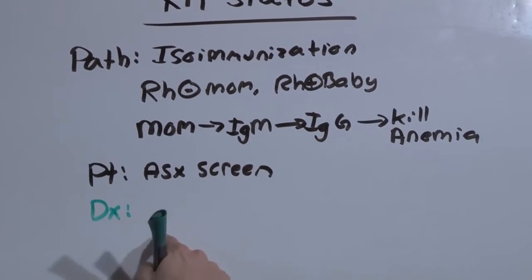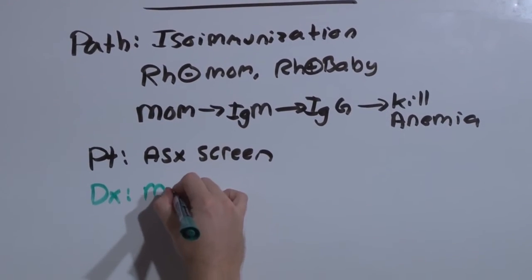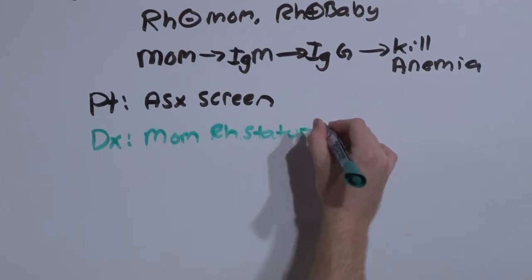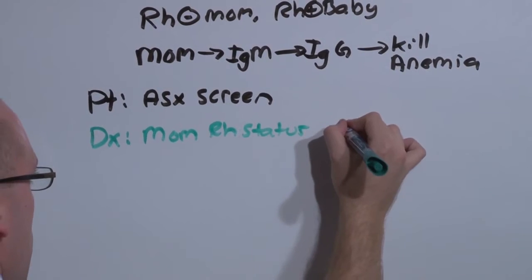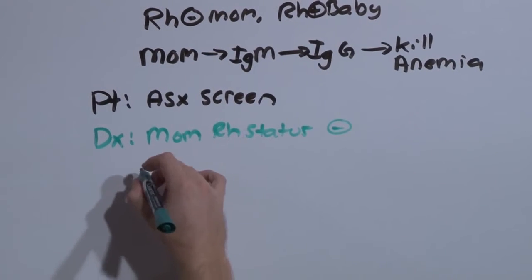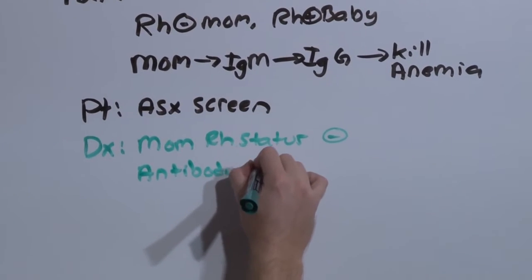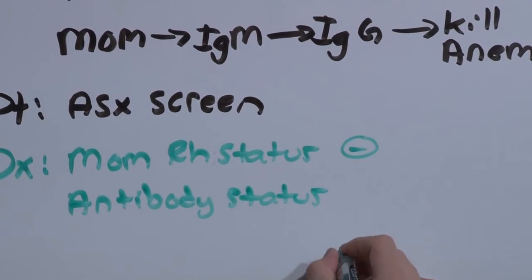And what you're screening for is mom's RH status. And generally, you already know this from the very beginning of pregnancy. Which you only care about this if she's RH negative. And then mom's antibody status.